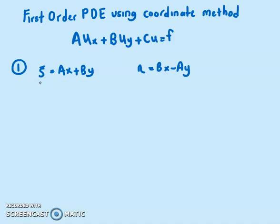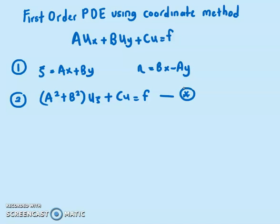If we differentiate Psi and eta with respect to X and Y, we get Psi_X, Psi_Y, eta_X, and eta_Y. The next step uses the equation where A² plus B² times U_Psi plus C·U equals F. This is our main equation.